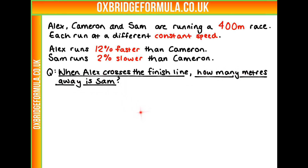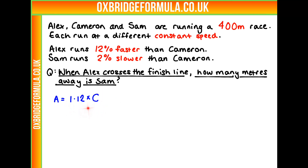So how are we going to start with this question? We have some information about how people run in relation to each other. Let's write this numerically and see where that gets us. We know that Alex is 12% faster than Cameron. Using A to represent Alex and C to represent Cameron, A is going to be 1.12 times Cameron — that's 112%, or 12% faster than Cameron.